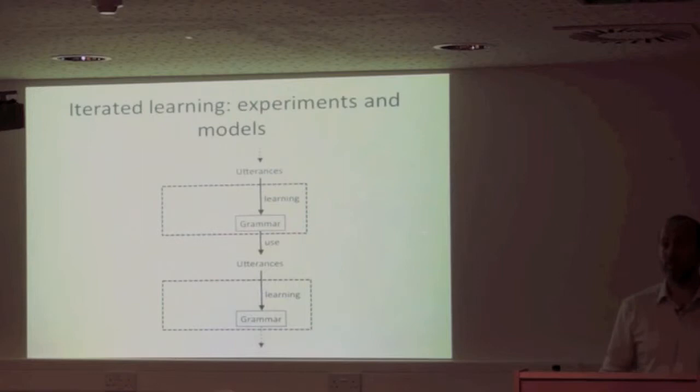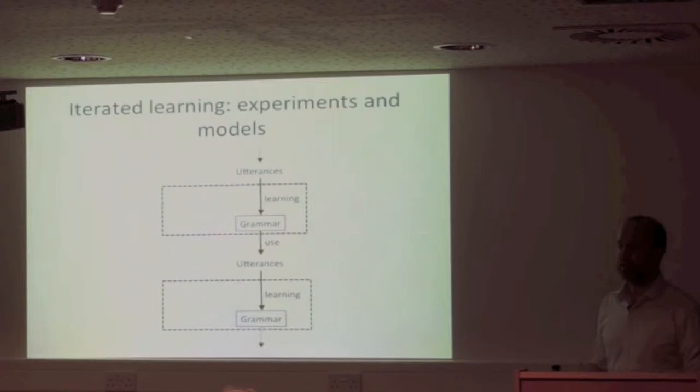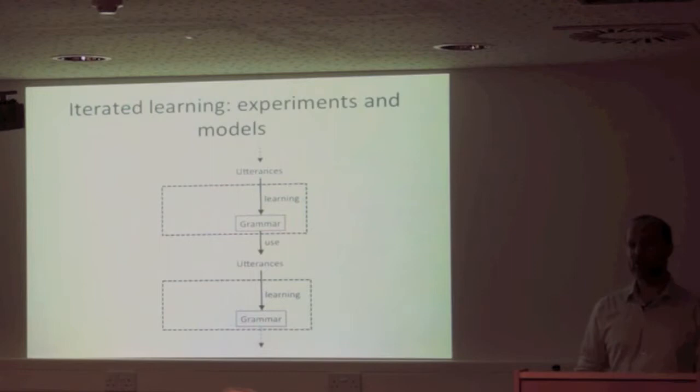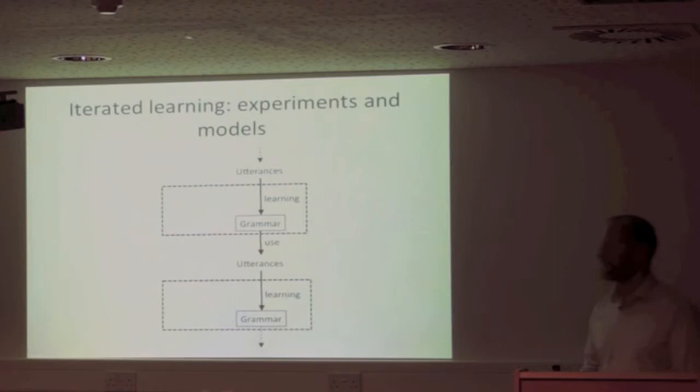You can simulate iterated learning with a little simulated model of a learner and a simulated model of language use, and see what happens to a language transmitted in this way. You can also do the same thing in the lab: get people in, ask them to learn a communication system, use it, and string people together in what we call a diffusion chain to see what happens to a miniature language as it's passed from person to person. That's iterated artificial language learning.